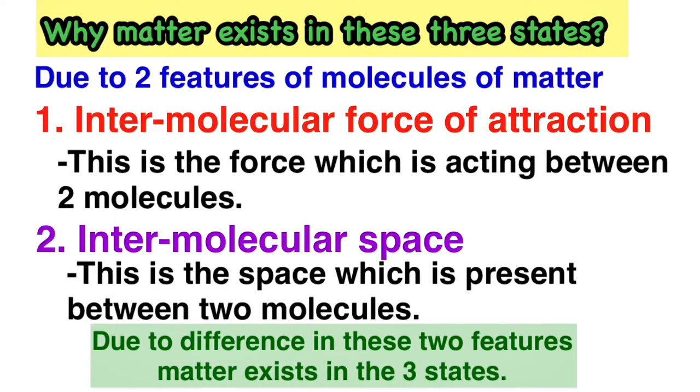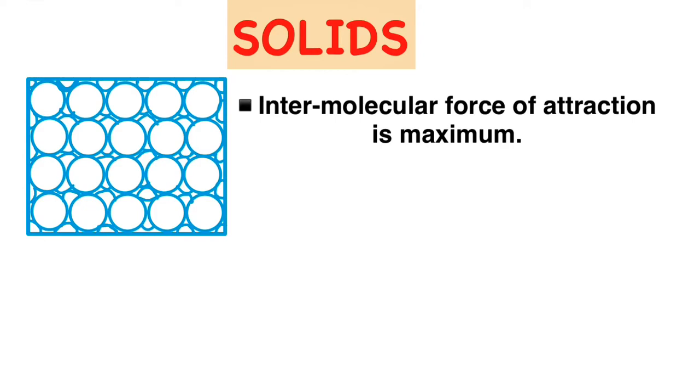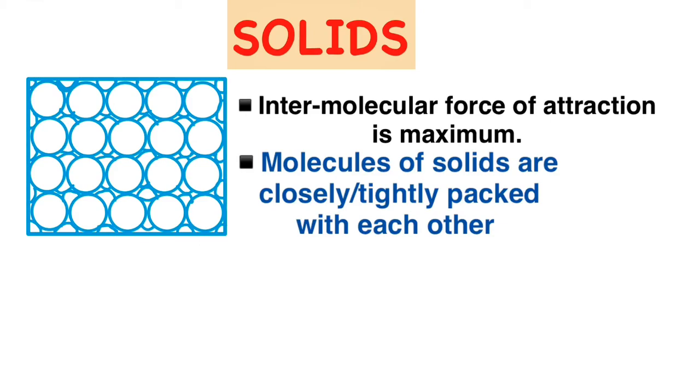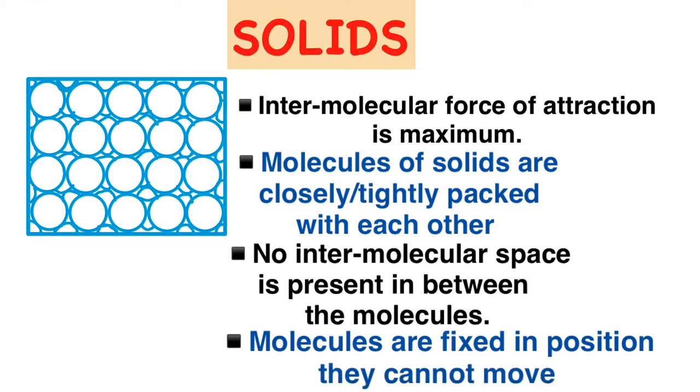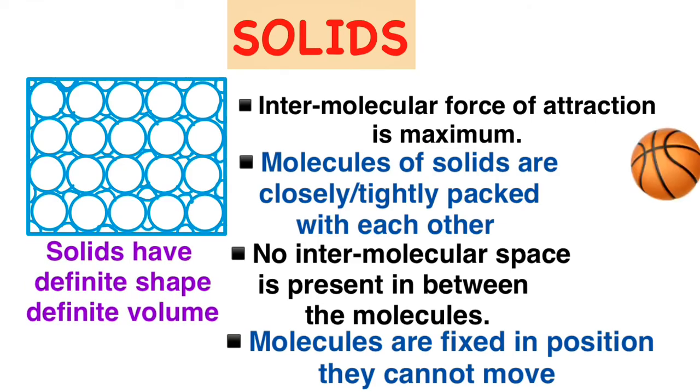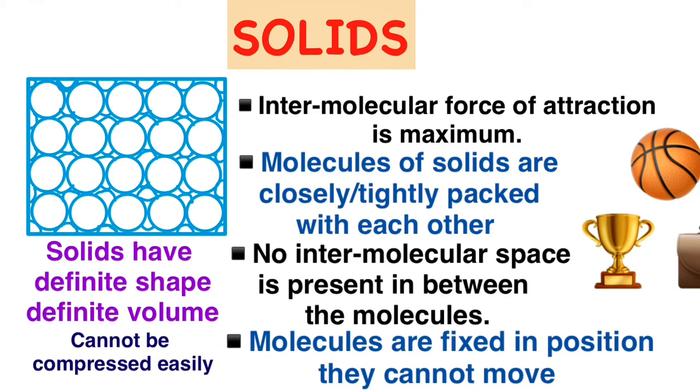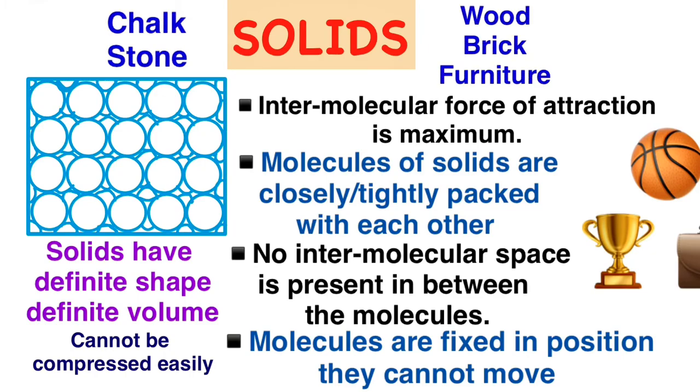In solids, the intermolecular force of attraction is maximum. That is, the molecules are closely packed or tightly packed with one another. We cannot find any intermolecular space in between the molecules. The molecules of solid are fixed in position and they cannot move. That is why a solid has a definite shape and a definite volume. Solids cannot be compressed easily. Examples of solids are chalk, stone, wood, brick, and furniture, which we all see around us.